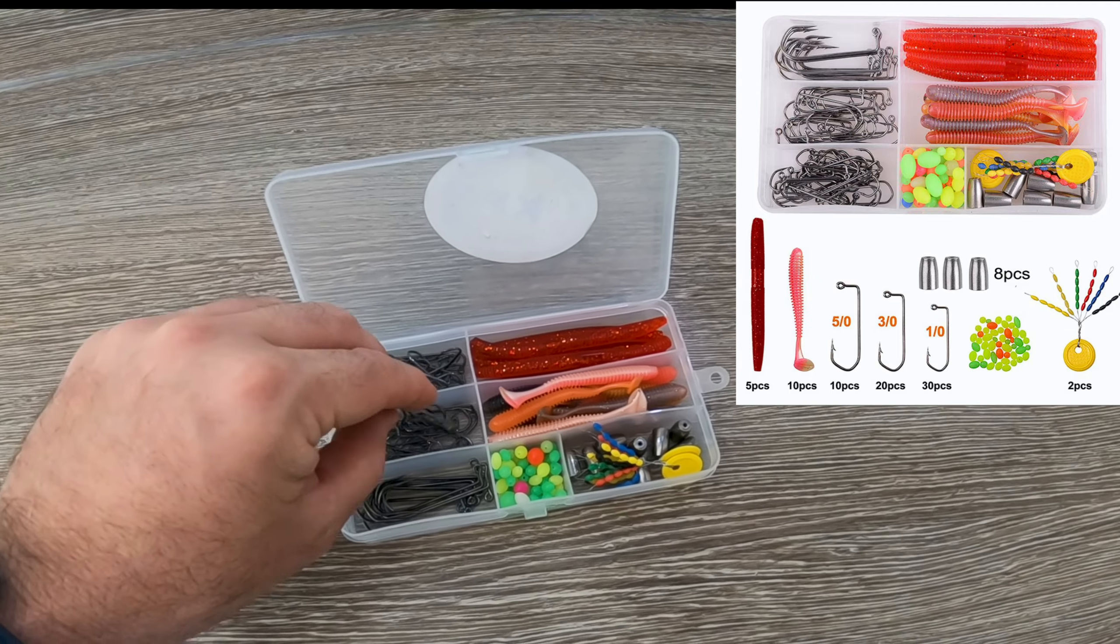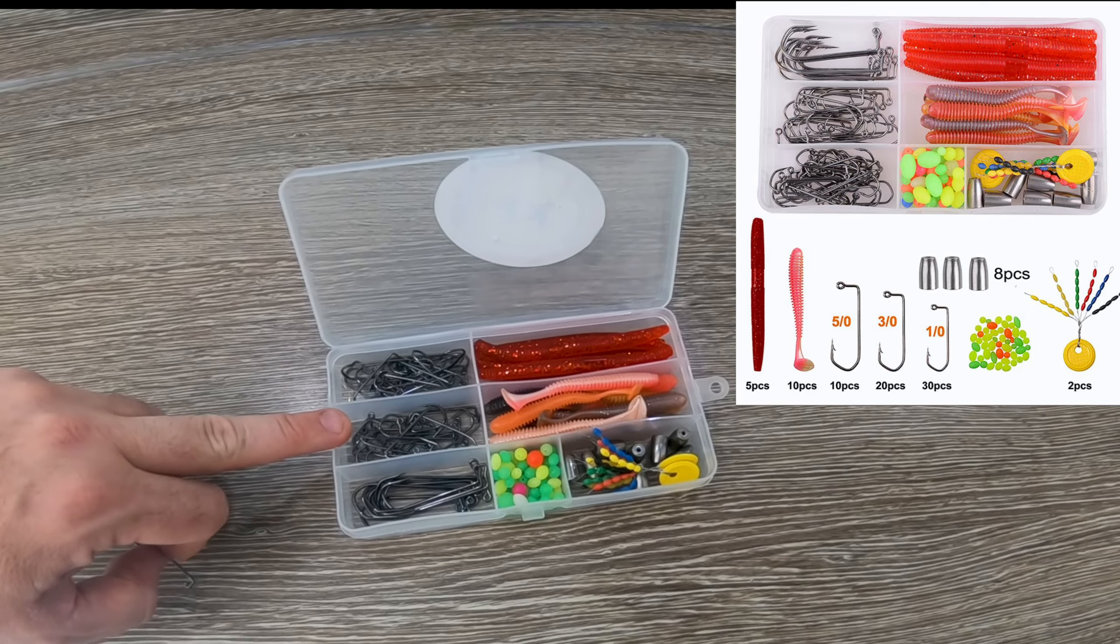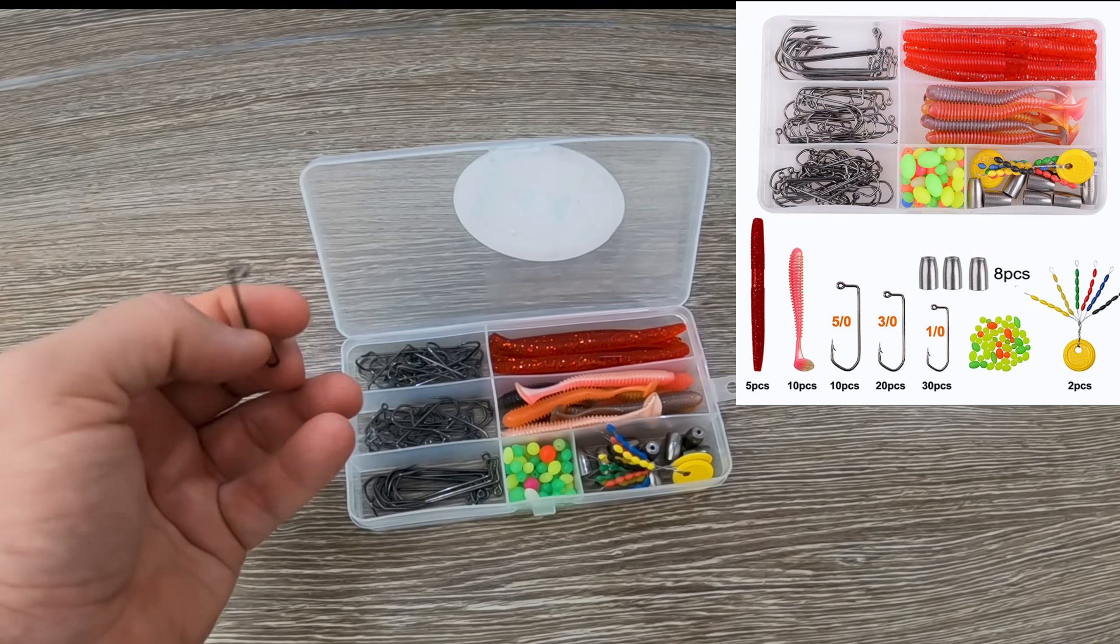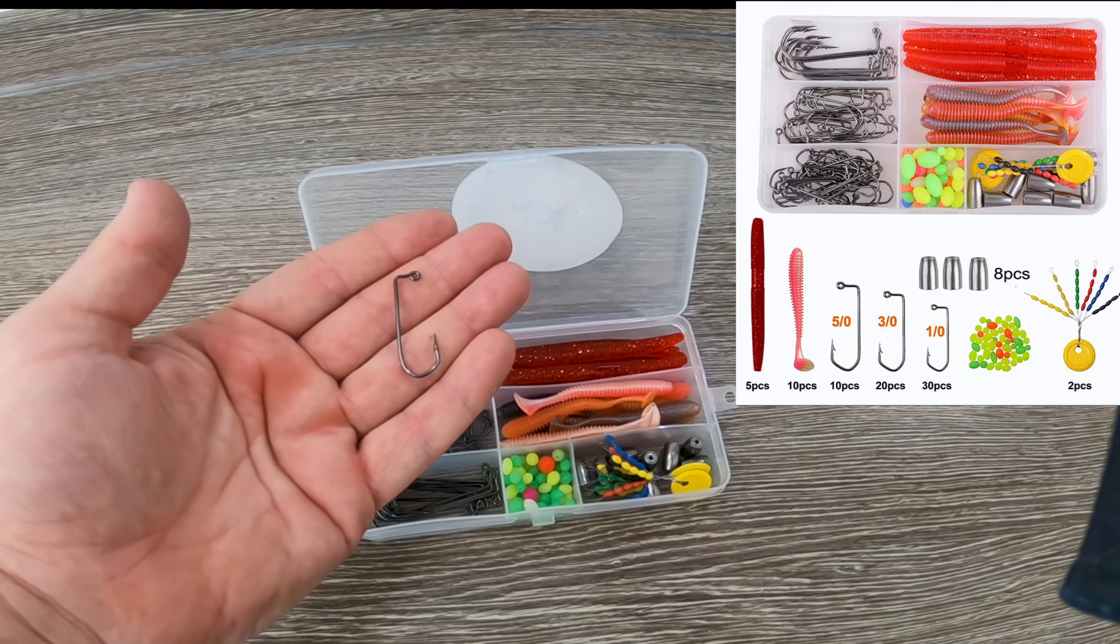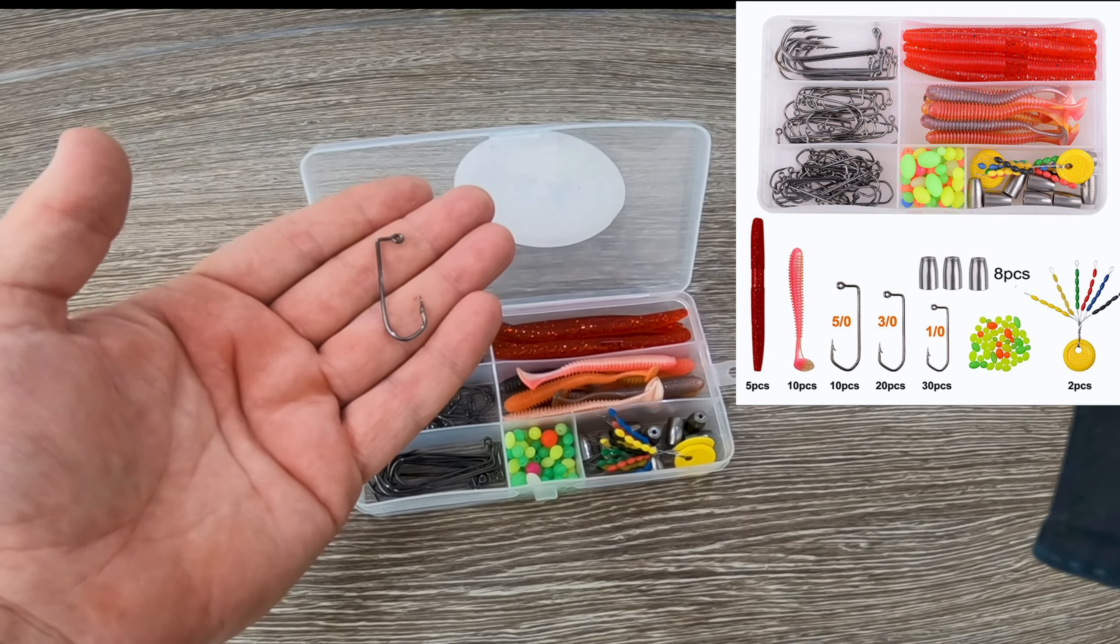This says it's a size 3, so you get 30 of those ones, 20 of these ones and 10 of these ones. So the middle ones are size 3 and they're 4 cm, it says 1.57 inch.